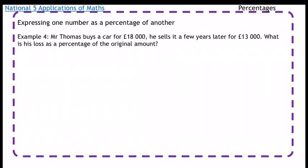Example 4: Mr. Thomas buys a car for £18,000, he sells it a few years later for £13,000. What is his loss as a percentage of the original amount?